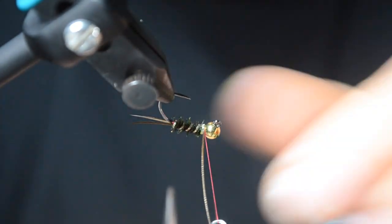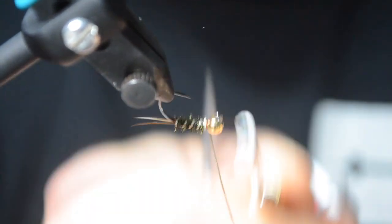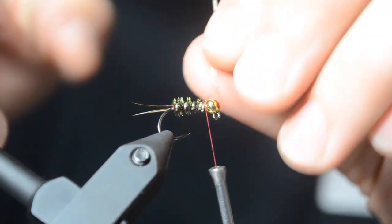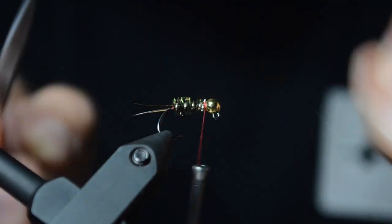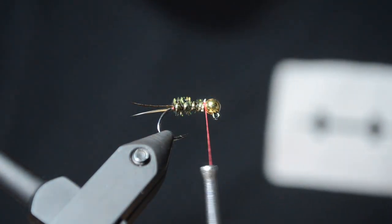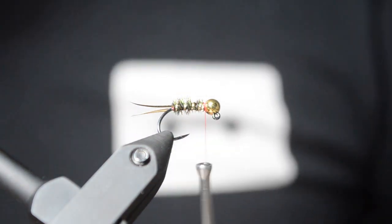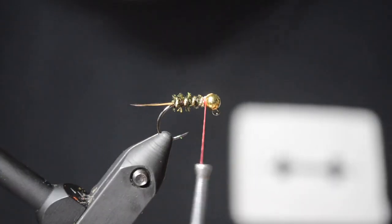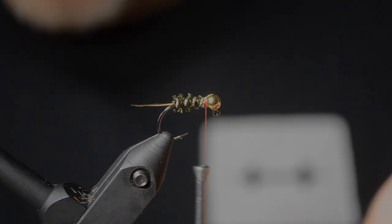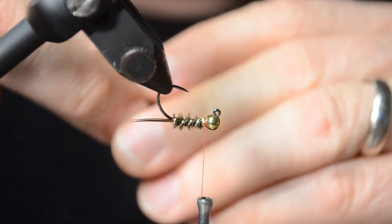So traditionally, when you tie in your biats, they would be on the back of the bead, on the top side right here. But it's just the opposite. Because this is going to ride hook point up, I tend to like to put the biats on the hook gap side, which is a little bit more of a pain.